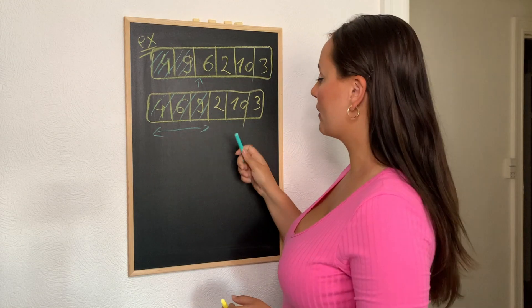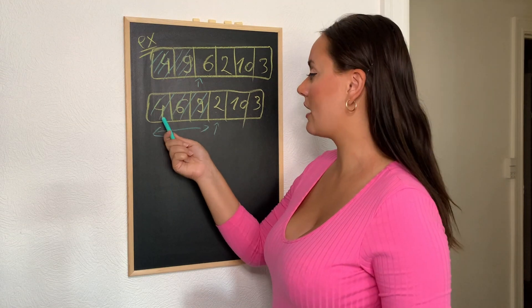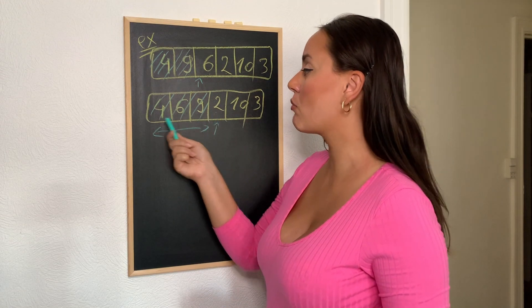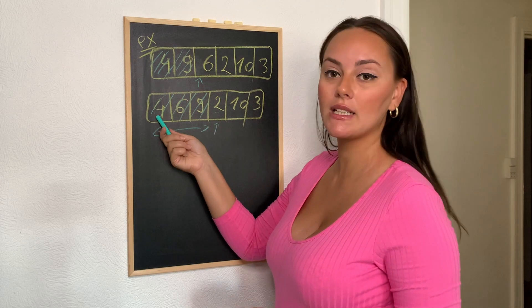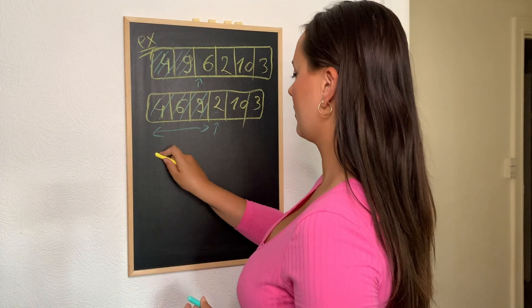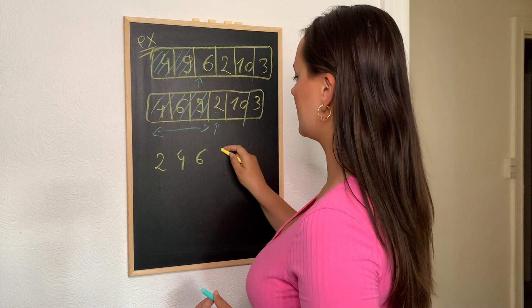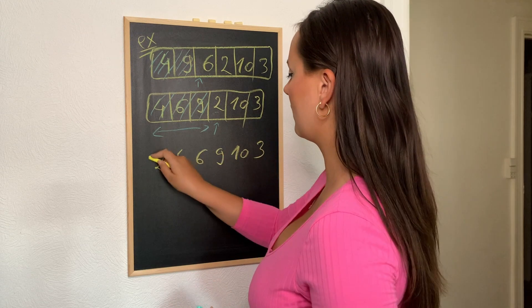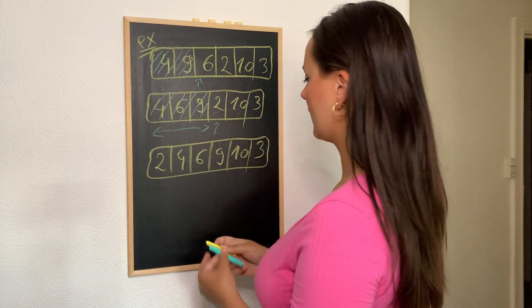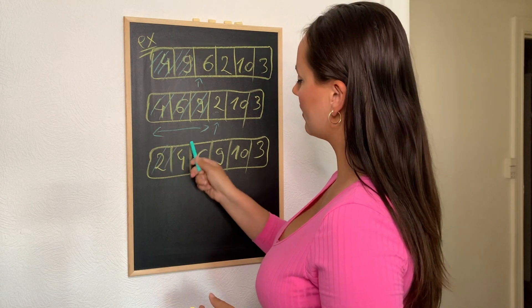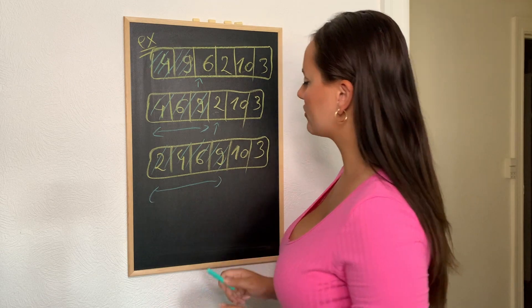Now we need to look at 2. We take 2 and compare it to the elements on its left. 2 is smaller than all the elements on its left, which tells us we need to add it at the beginning of the list. So the list will look like this: 2, 4, 6, 9, 10, and 3. Our sorted list now has 4 elements.